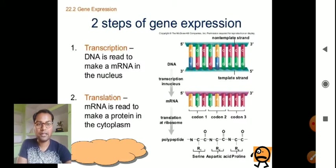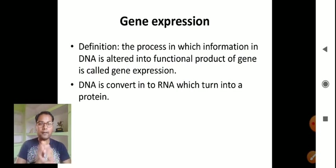Here is a diagram of gene expression. Gene expression is a process in which information in the DNA is altered into functional product of gene. DNA is converted into RNA which is turned into a protein. So the final product would be a protein.